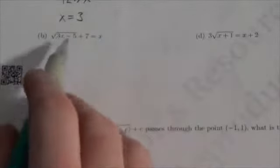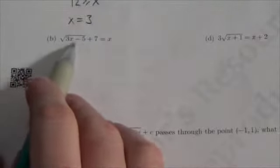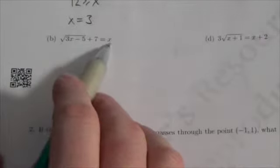All right, everybody. We're working through the radicals chapter here. What we're going to do is solve some equations. We're going to solve this one right here: the square root of 3x minus 5 plus 7 equals x.